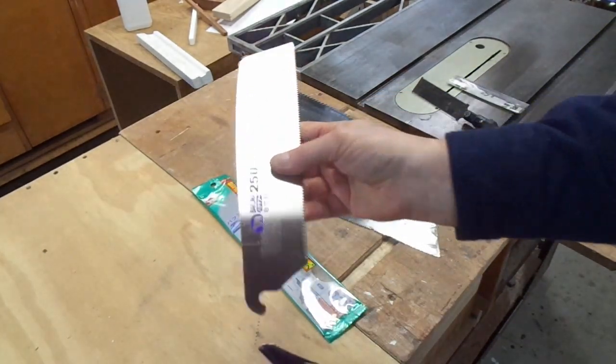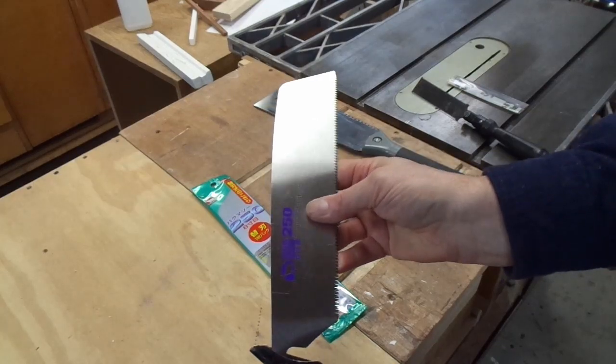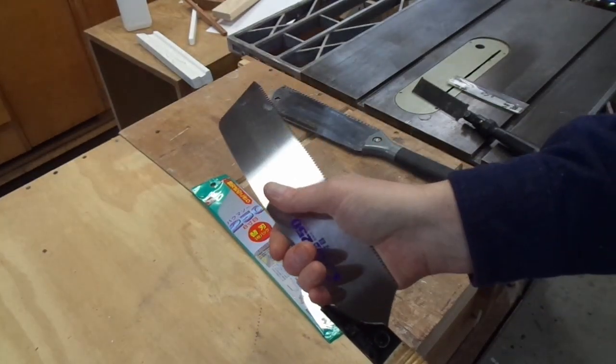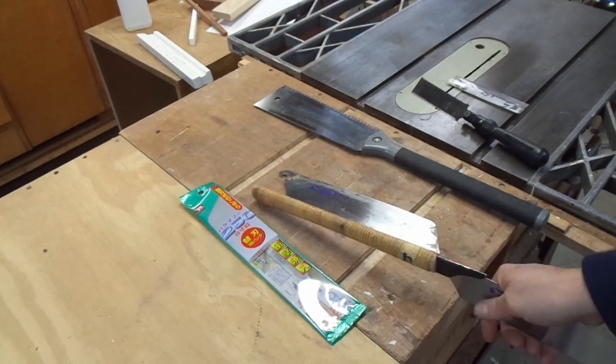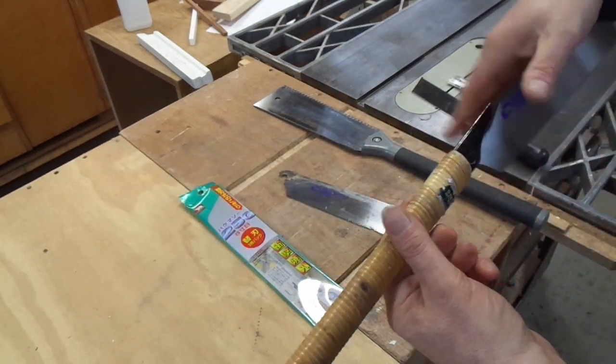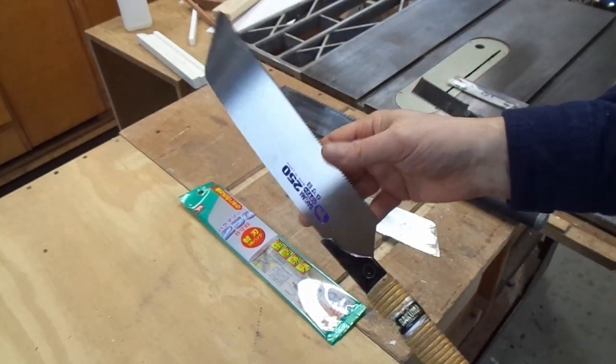Once I knew the blade did indeed come out, I was able to buy a duplicate replacement and put that in. Now I have a new saw, which is very nice.